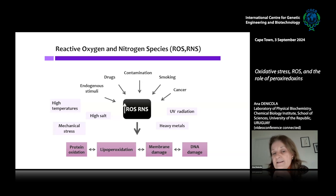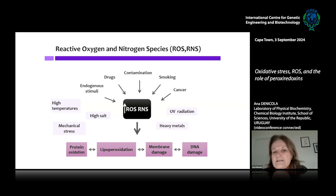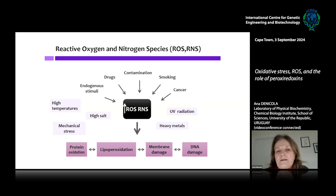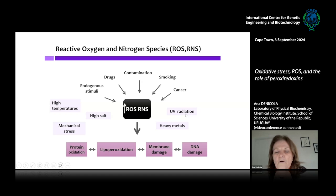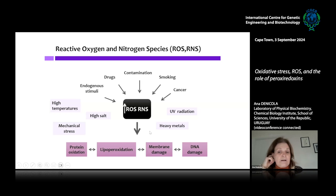ROS and RNS — reactive nitrogen species — can be formed endogenously as a consequence of oxygen metabolism but also as the product of enzymatic reactions. I told you about NOS that forms NO, but also NADPH oxidases (NOXes) form superoxide or hydrogen peroxide. These species can also be formed by environmental agents like UV light or smoke. It is well documented that these ROS and RNS species are very reactive with proteins, lipids, and DNA, and can alter and damage cellular function.